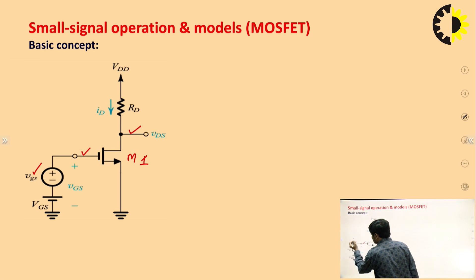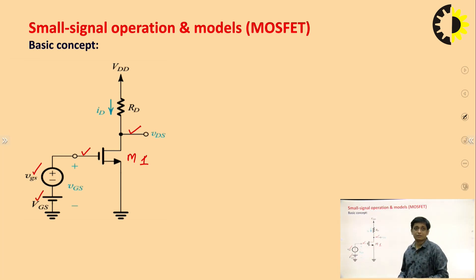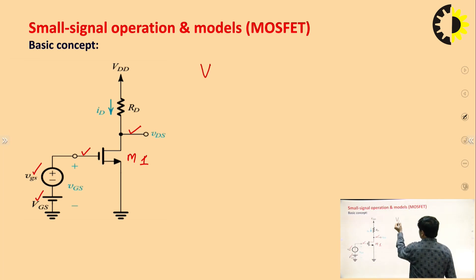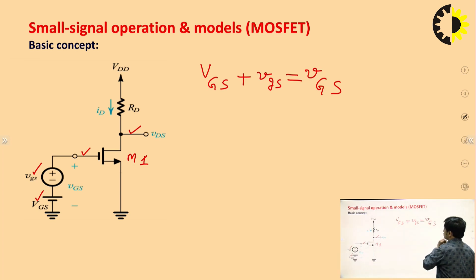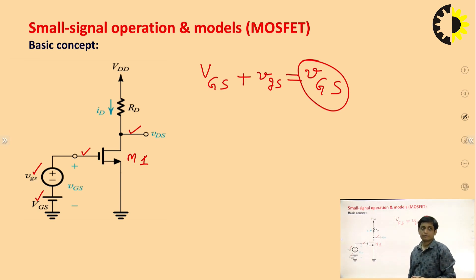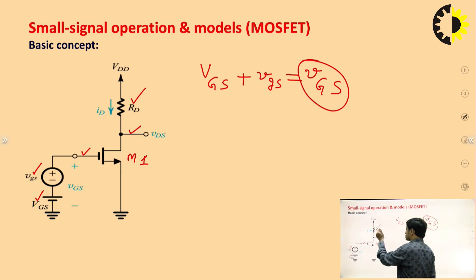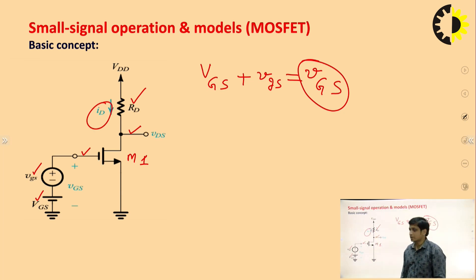This small vgs is the input AC signal to be amplified, and capital VGS is the DC voltage. The total voltage at the gate terminal of the MOSFET is the sum of capital VGS (DC quantity) and small vgs (AC quantity). The resistance Rd is the drain resistance connected at the drain terminal, and the current flowing through the drain terminal is Id. This is the basic common source amplifier without any capacitor.